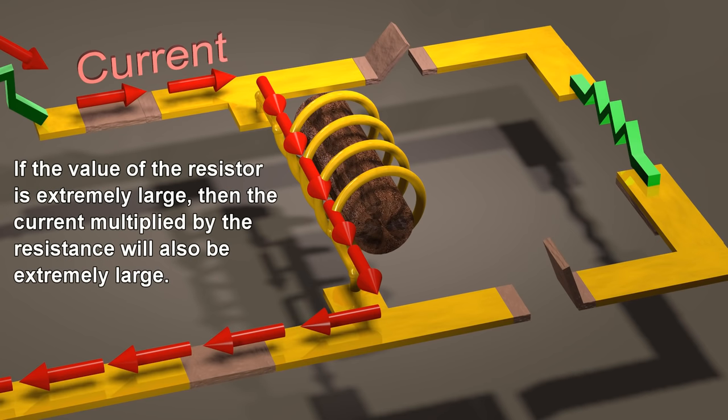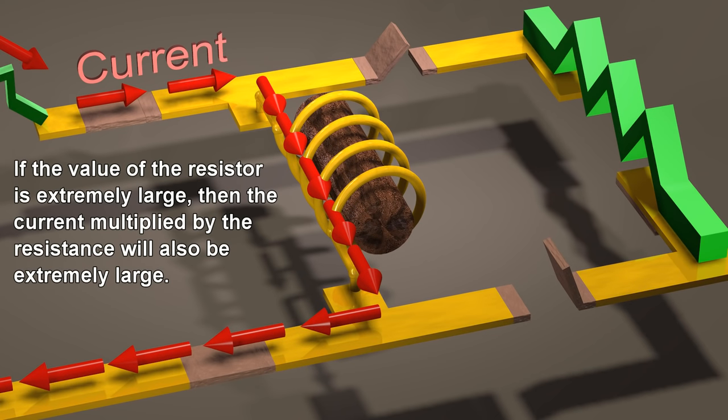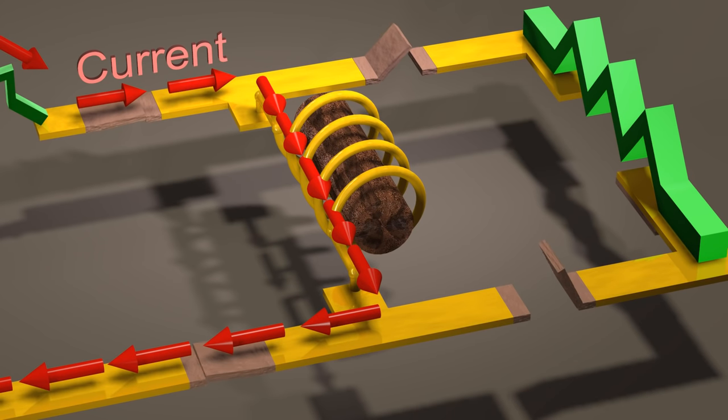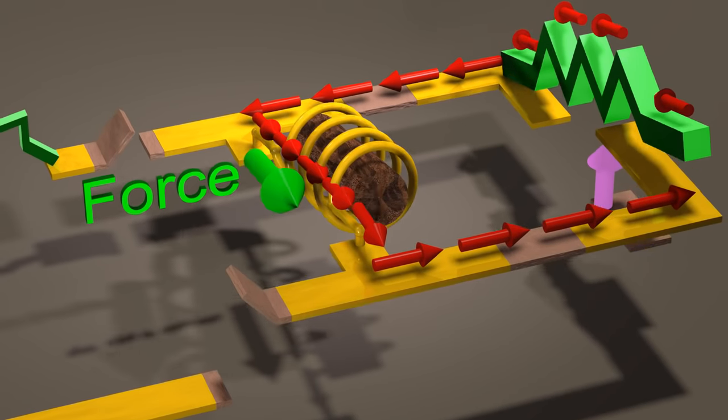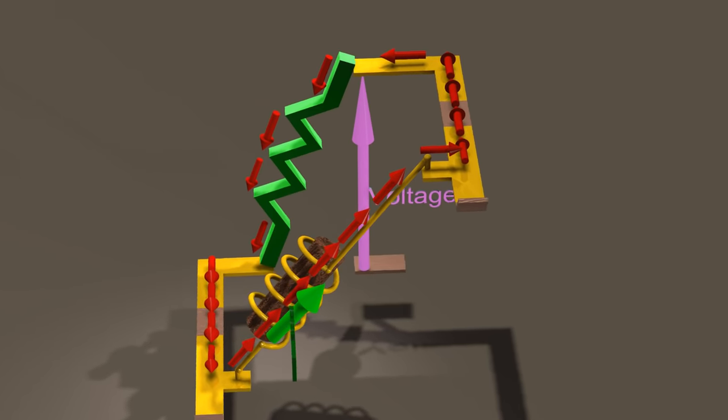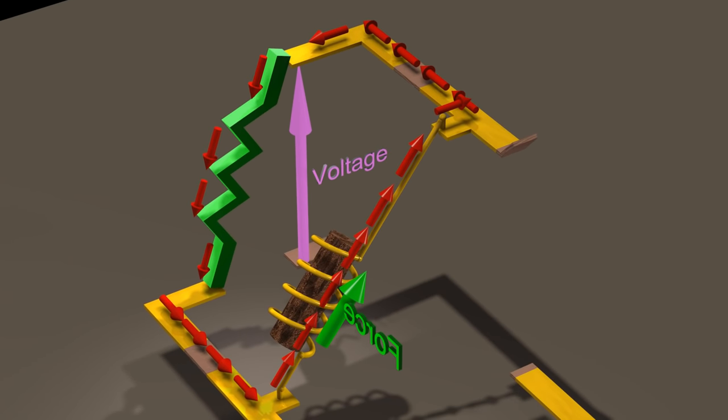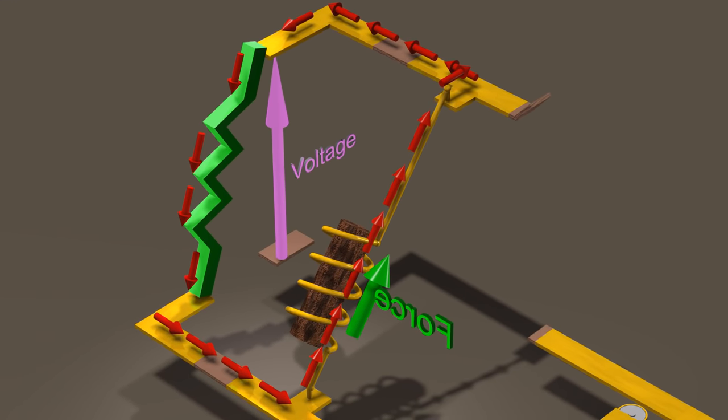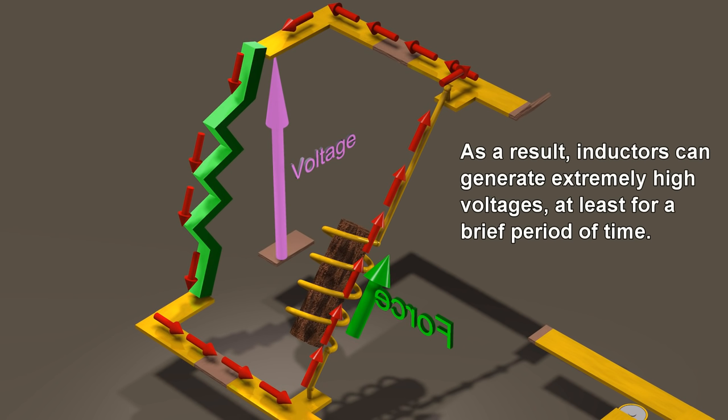If the value of the resistor is extremely large, then the current multiplied by the resistance will also be extremely large. As a result, inductors can generate extremely high voltages, at least for a brief period of time.